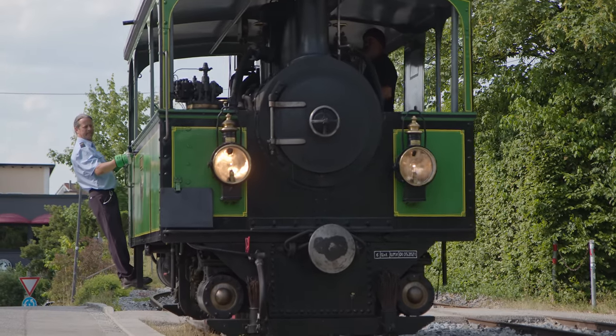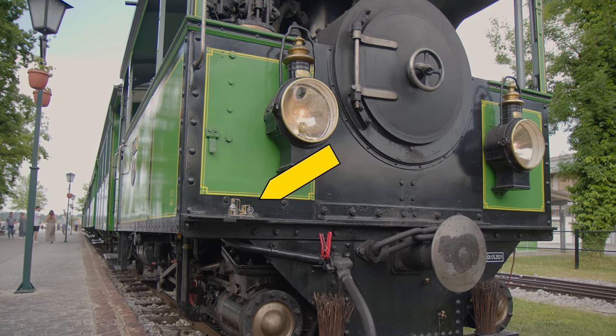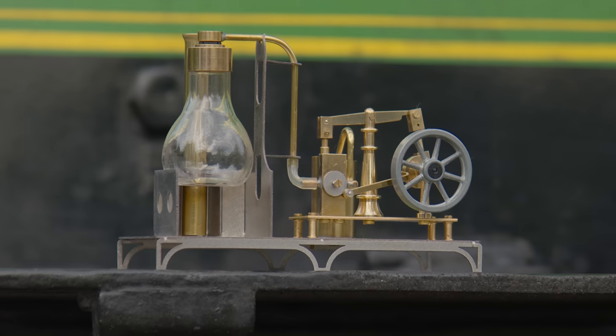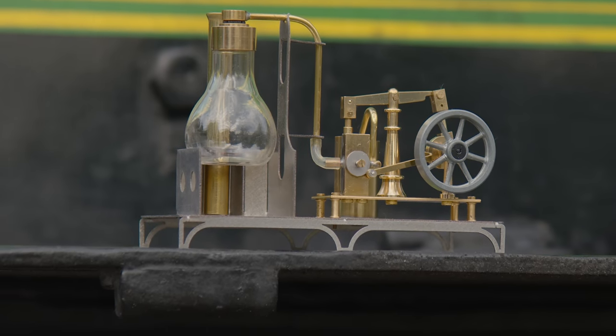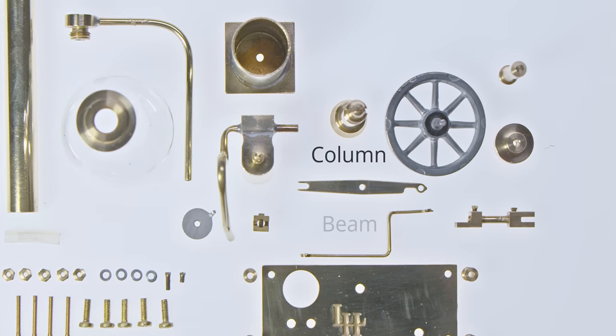To see how tiny our machine actually is, let's compare it to this 1887 Kimse locomotive. And these are the parts we are going to assemble.